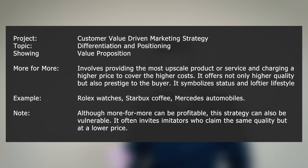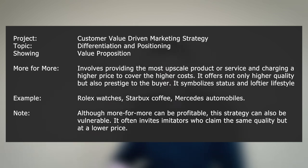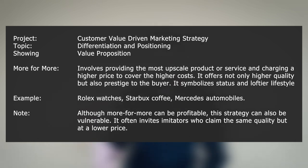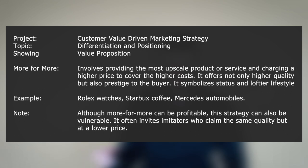More for more involves providing the most upscale product or service and charging a higher price to cover the higher costs. It offers not only higher quality but also prestige to the buyer — it symbolizes status and a loftier lifestyle. Examples are Rolex watches, Starbucks coffee, and Mercedes automobiles. Although more for more can be profitable, this strategy can also be very vulnerable — it often invites imitators who claim the same quality but at a lower price.